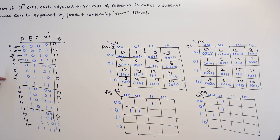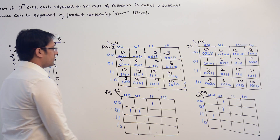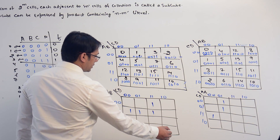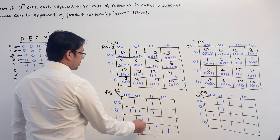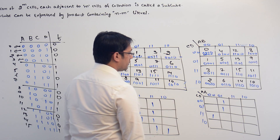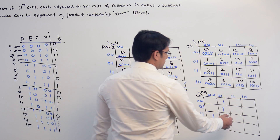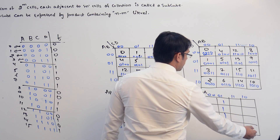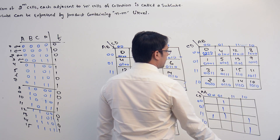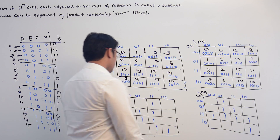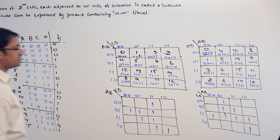Then we have 7, 10, 11, 13, and 15. Marking these in both K-maps: 7, 10, 11, 13, and 15 in the first K-map, and 7, 10, 11, 13, and 15 in the second K-map as well. Okay, we have these 2 K-maps.